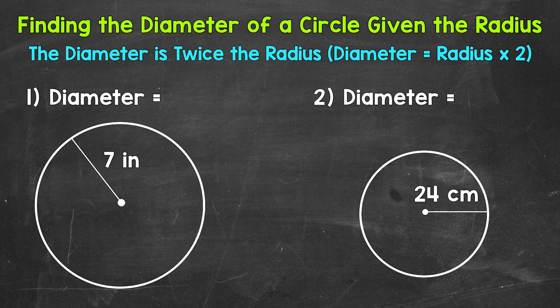The radius of a circle is the distance from the center of the circle to any point on the circle — so the length of a line segment that connects the center to any point on the circle.